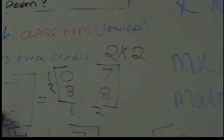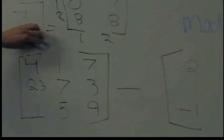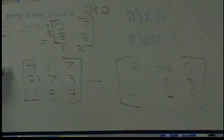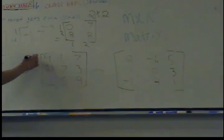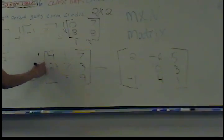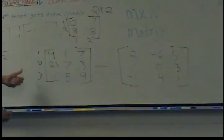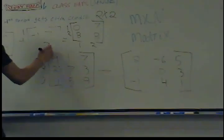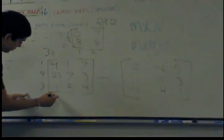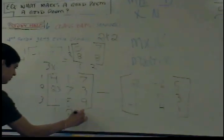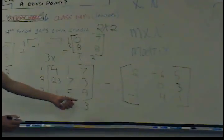And just like you can add those two, as long as they have the same dimensions, you can add bigger ones. This is 1, 2, 3 rows by 1, 2, 3 columns. So it's a 3 by 3.